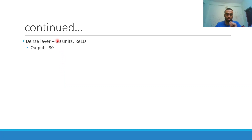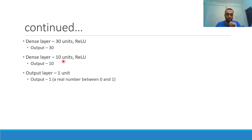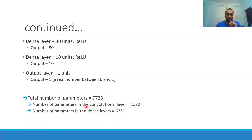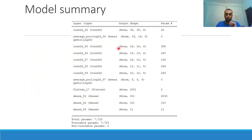The dense layers start with 30 units using ReLU, then 10 units using ReLU, and the output layer has one unit using sigmoid for binary classification. The total number of parameters is around 7,700 — approximately 1,400 in the convolutional layers and 6,400 in the dense layers. The overall model summary shows six convolutional layers, two average pooling layers, one flattening layer, and three dense layers — four extra layers compared to the eye model.